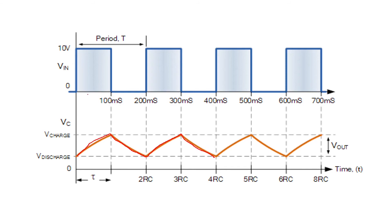By adjusting the time period of the input and the RC time constant (the charging time), you can see that for a square wave input, you can get a triangular wave output. This is how an RC integrator for a square wave input can produce a triangular wave output.